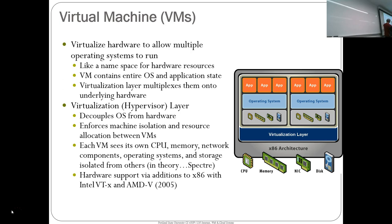The virtual machine sees its own CPU, its own memory, its own network components, and runs its own operating system, isolated from others. This really became popular when Intel and AMD started supporting virtualization in hardware around 2005. That hardware support is part of what helped the cloud proliferate.